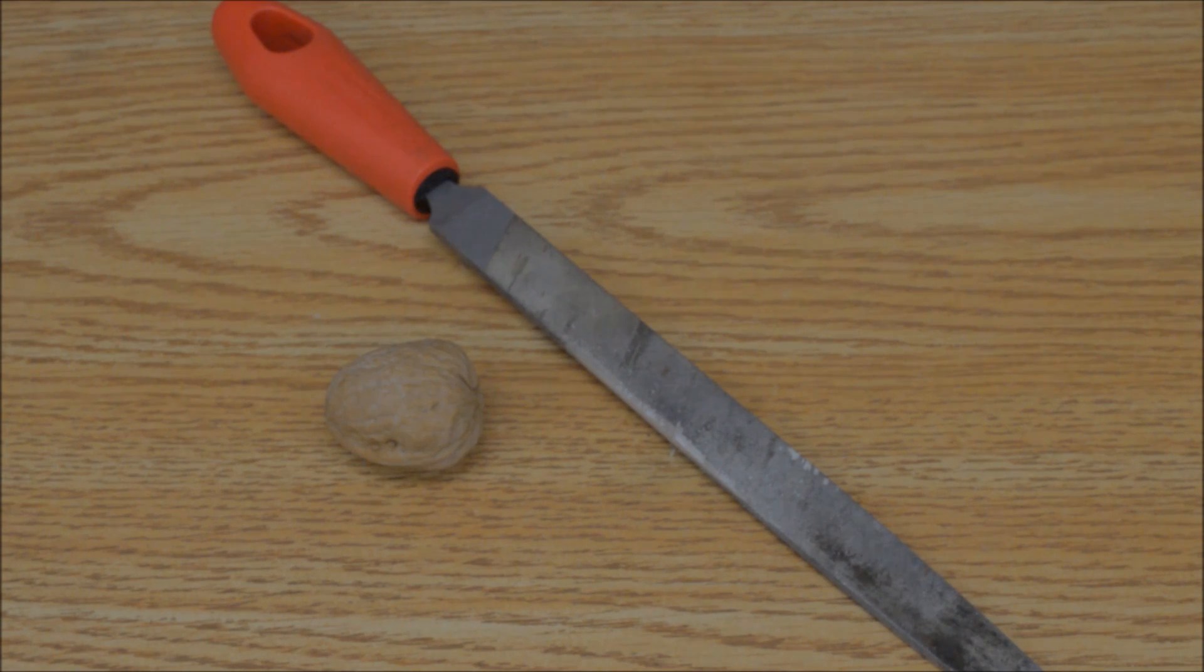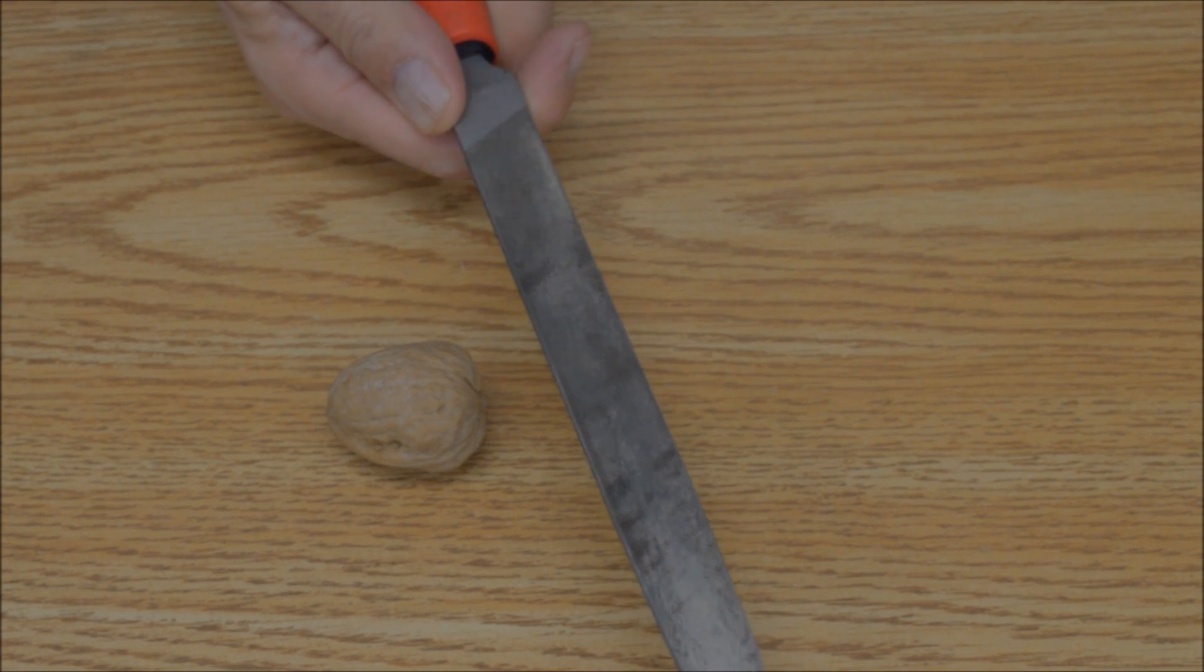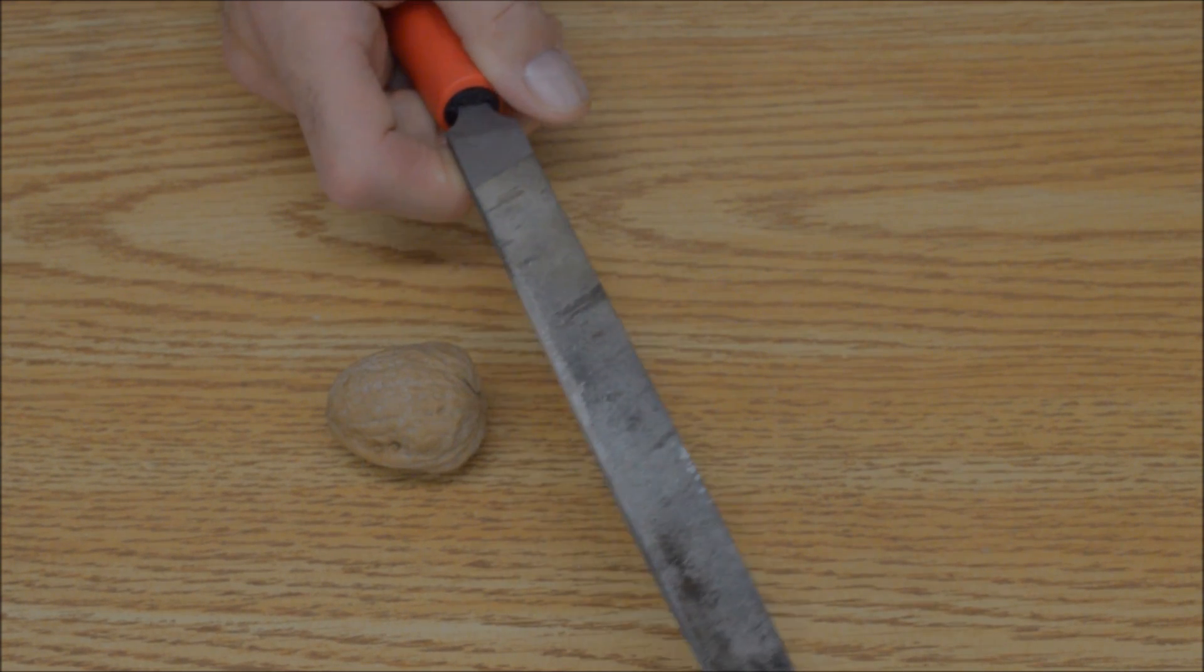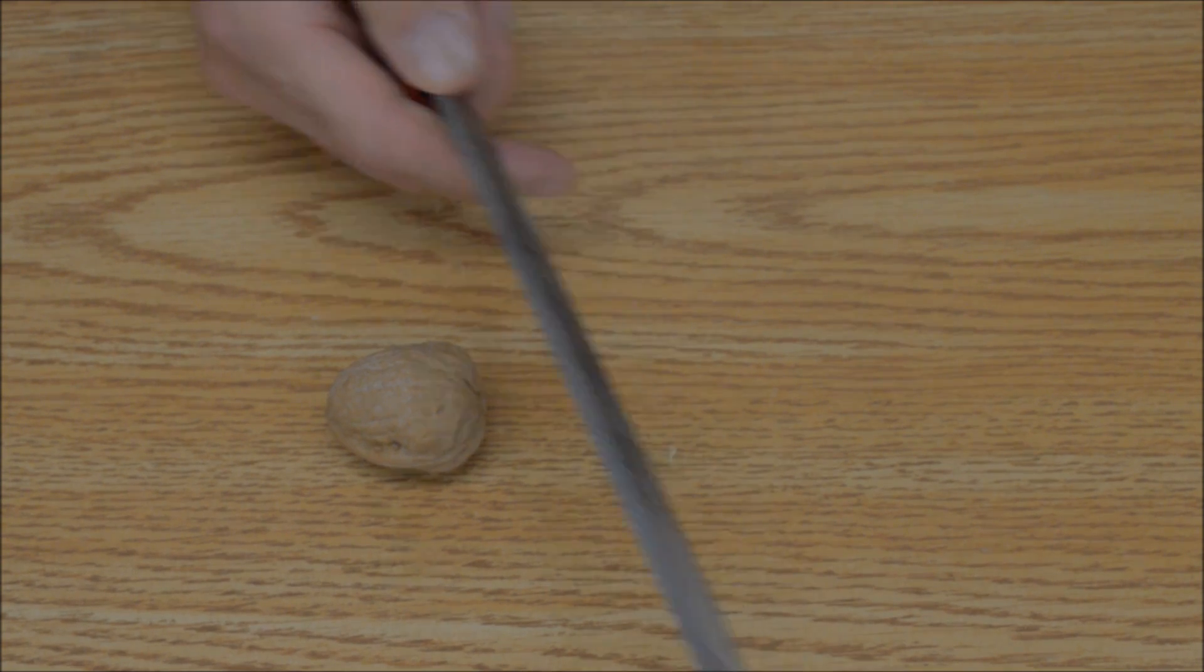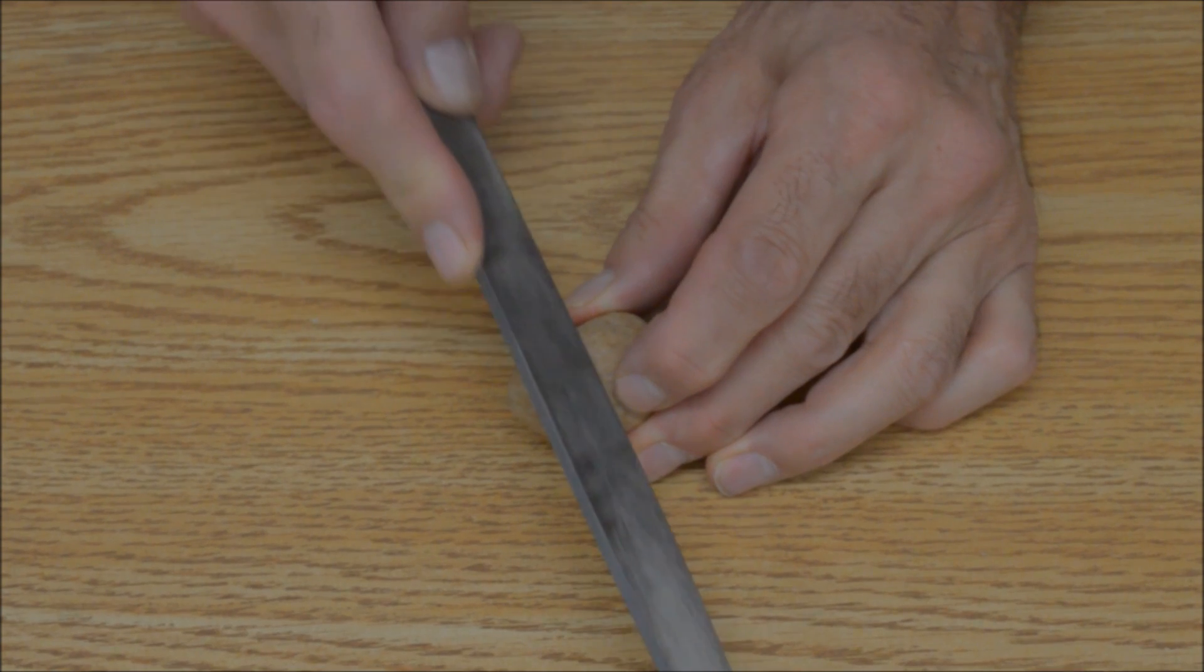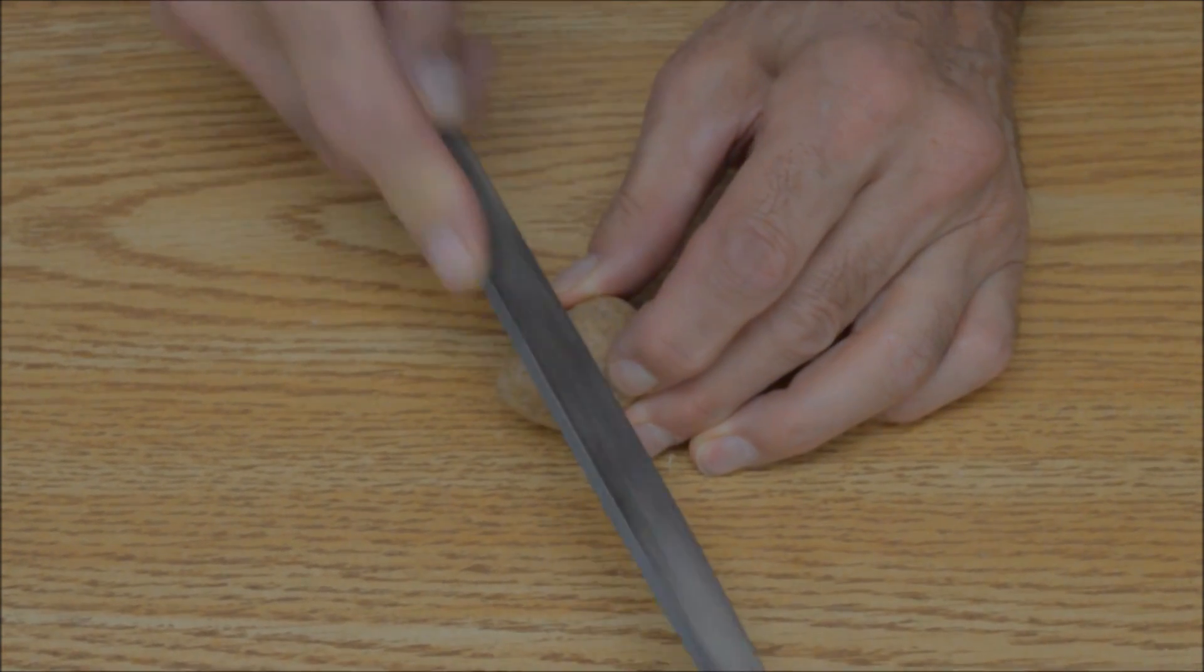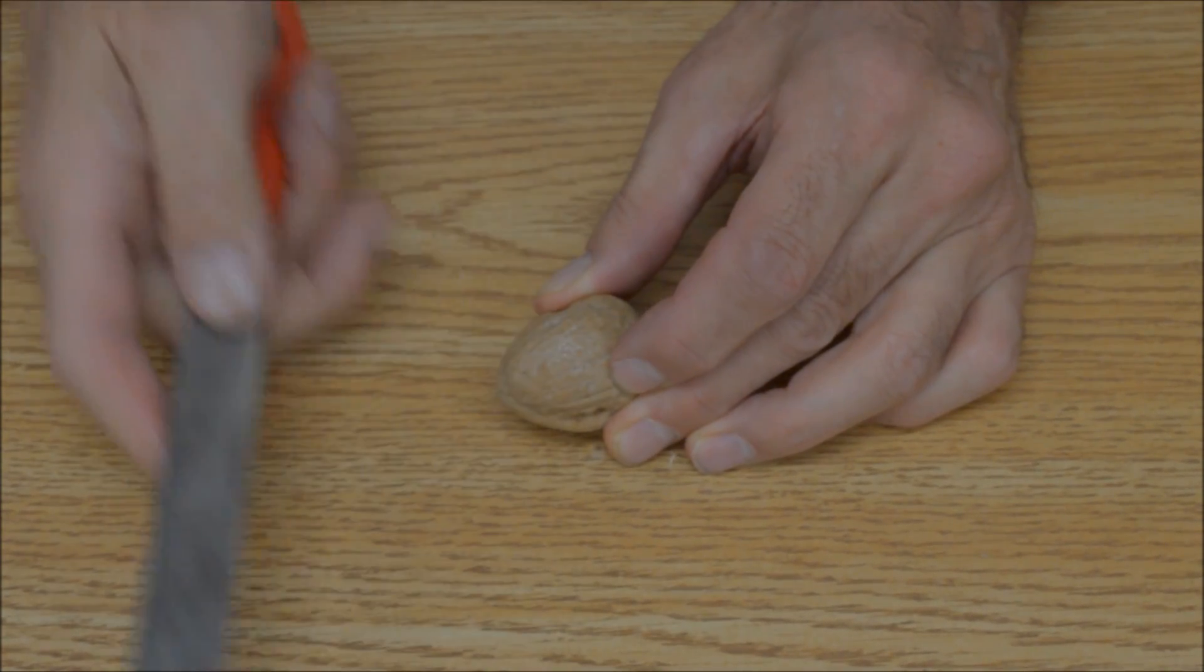A file works well for large seed. You can use a triangular file or a regular flat file. If you're using a flat file, hold it at an angle so that the corner is making a v-shaped cut in the seed. You can put the seed on the table and run the file over it like this, but I find it easier to rest the file on the table and run the seed over the file.